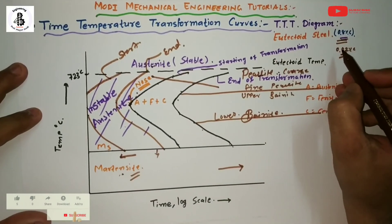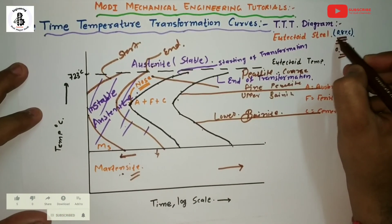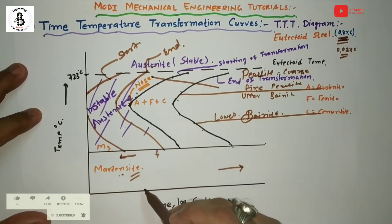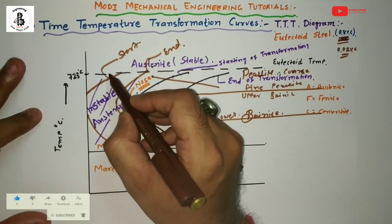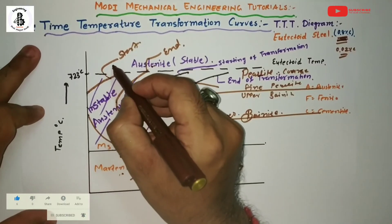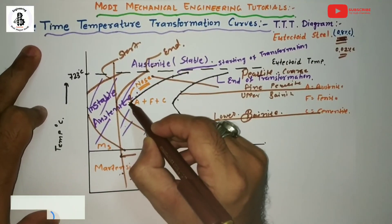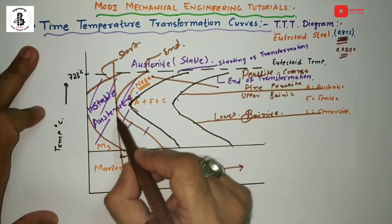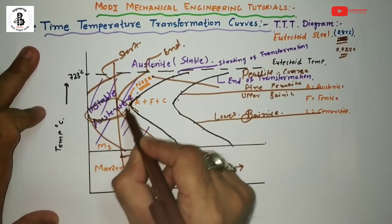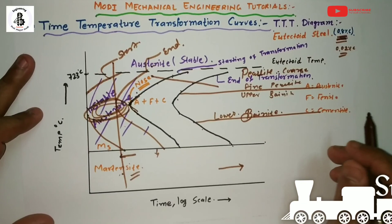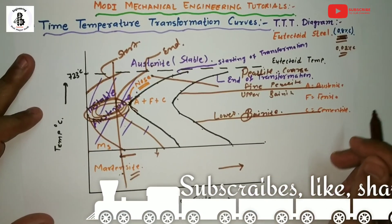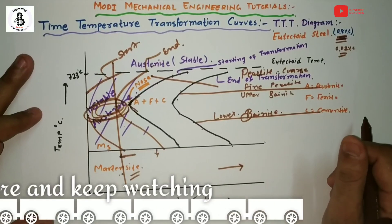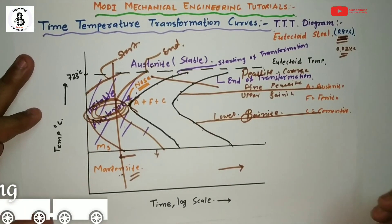If you want to convert 0.8 percent carbon steel from austenite to martensite, just follow rapid cooling. The transformation line is from this side, so there will be space available like this. I hope you understand this. If you like this, then subscribe and share more mechanical engineering tutorials. Thank you so much and keep watching.